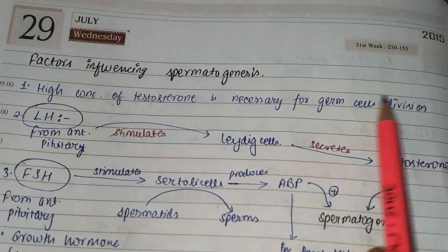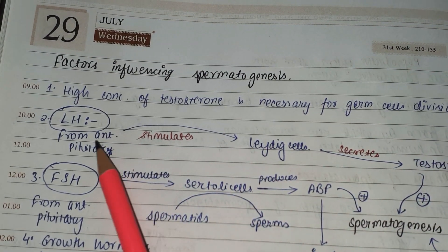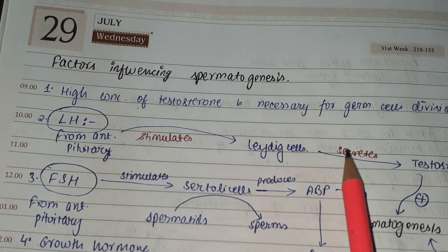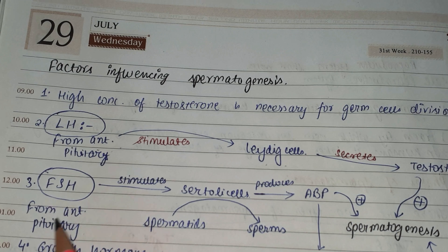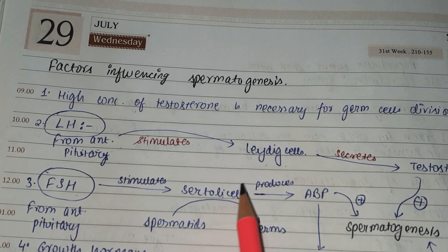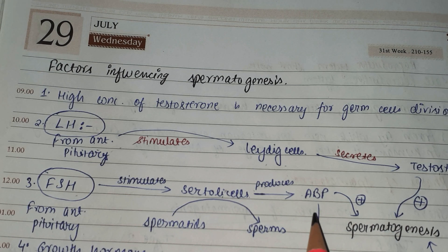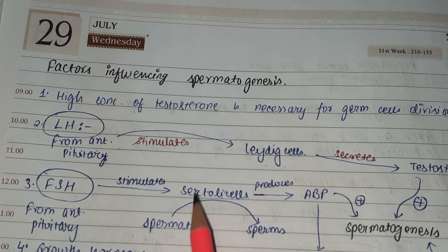Now the factors influencing spermatogenesis: first, a high concentration of testosterone is necessary for germ cell division. LH (luteinizing hormone) from the anterior pituitary stimulates the Leydig cells, and Leydig cells secrete testosterone, which has a positive effect on spermatogenesis. FSH from the anterior pituitary stimulates the Sertoli cells, and Sertoli cells produce androgen binding protein (ABP).